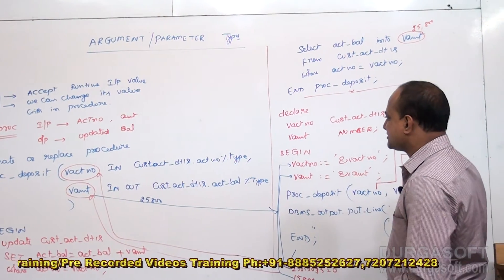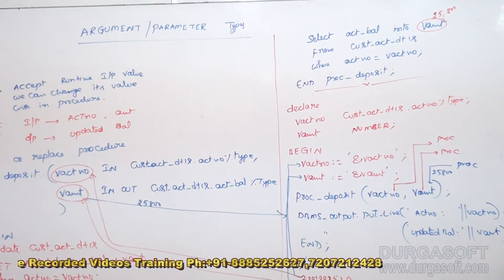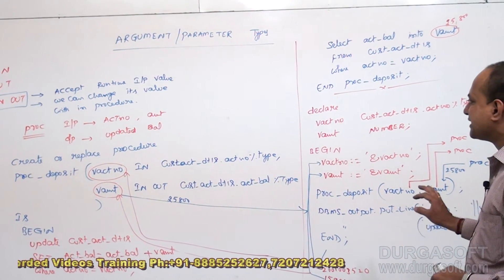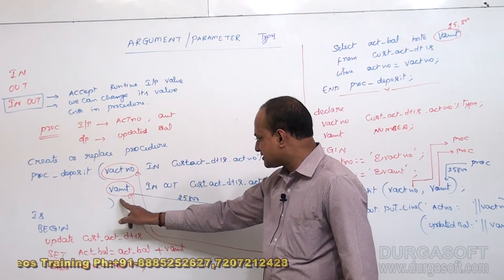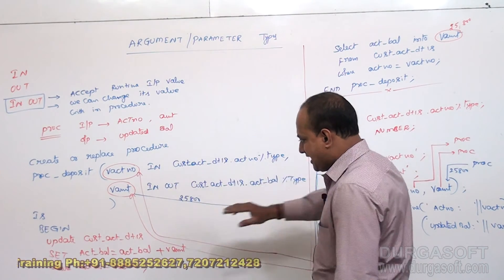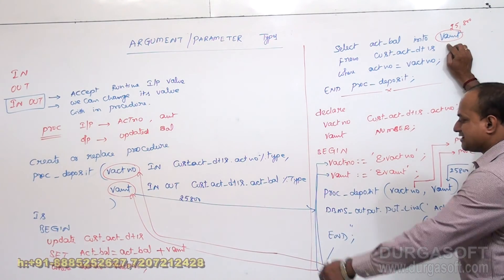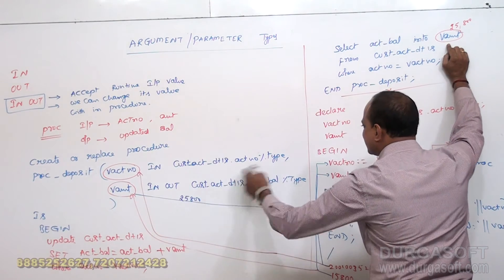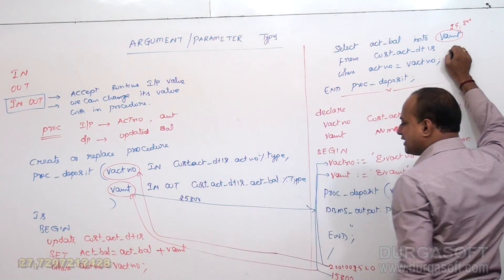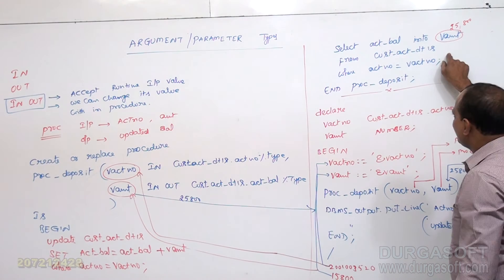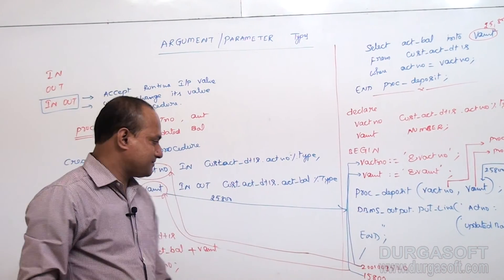So this is what IN-type, OUT-type, and IN-OUT type arguments are about. Please look at the program and procedure and you can understand it very easily. An IN-OUT type argument takes input and generates output — in the middle of the procedure you change its value. v_amount value was initially 15800 as input, and the output returned is 25800, meaning its value was changed. You can change an IN-OUT type argument value. That is all about IN-type, OUT-type, and IN-OUT type arguments.